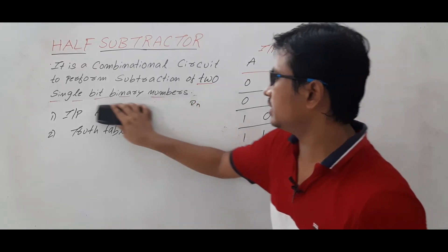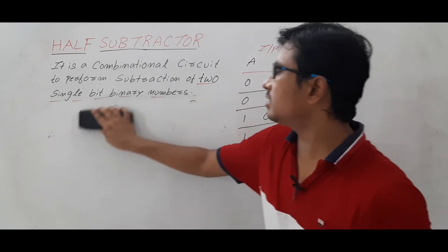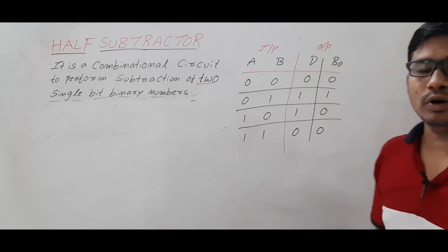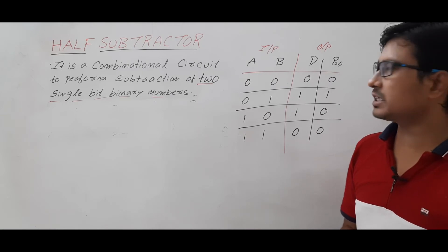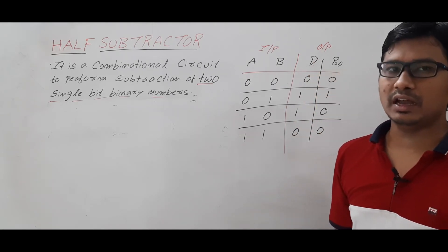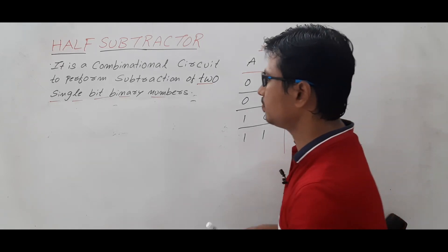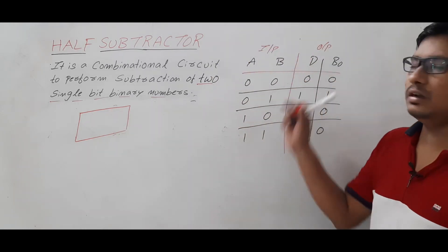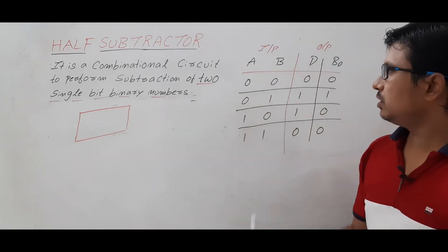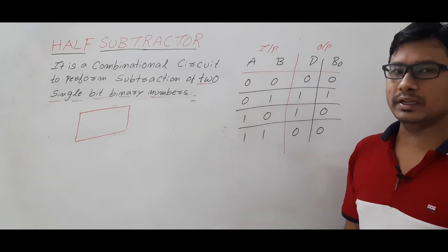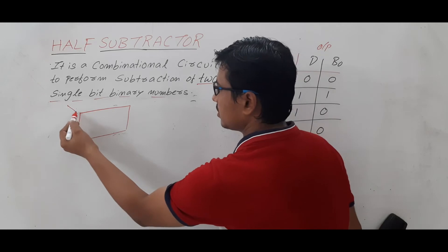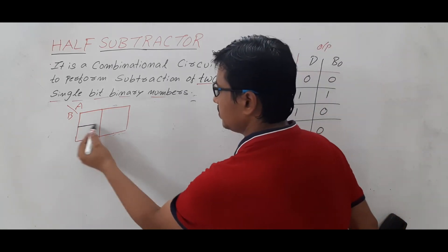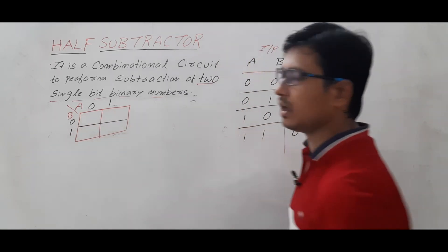Now let me find the Boolean expressions. There are two functions: D (difference) and borrow. I will use a K-map to find the Boolean expression for the difference. Since there are two inputs A and B, the K-map will have 2² = 4 cells. Wherever the function produces output 1, those are called minterms; wherever it produces 0, those are called maxterms.